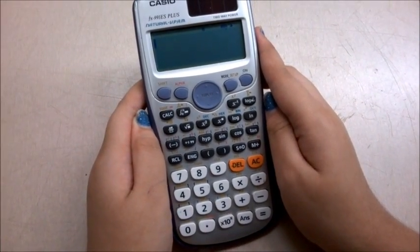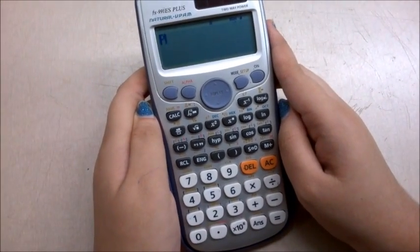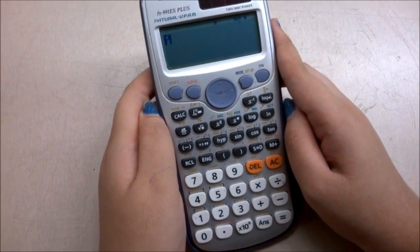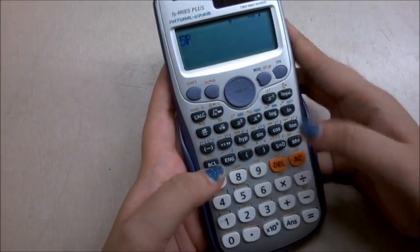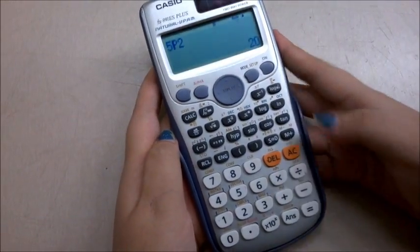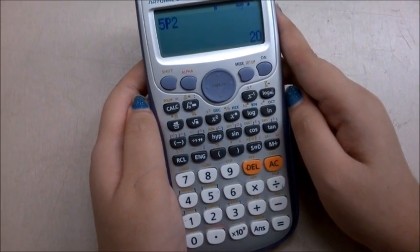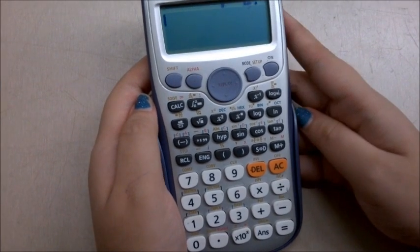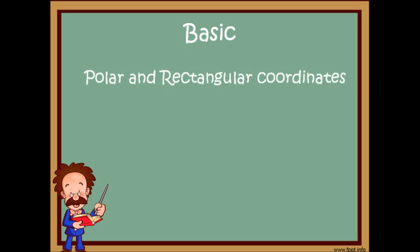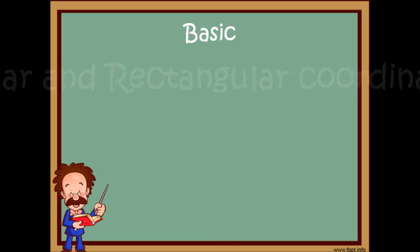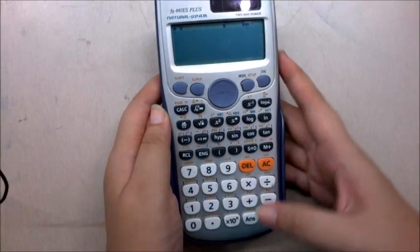We can find values of permutations and combinations very easily using a scientific calculator. Just press shift and the multiplication sign so that the letter P appears on your calculator. Now enter the power and the base that you want. Here we are calculating the value of 5P2, so we type 5 and then 2 and press equal to get the answer. Similarly, we can find the value of combinations by pressing shift and then the division sign, then pressing equal to get the value required.